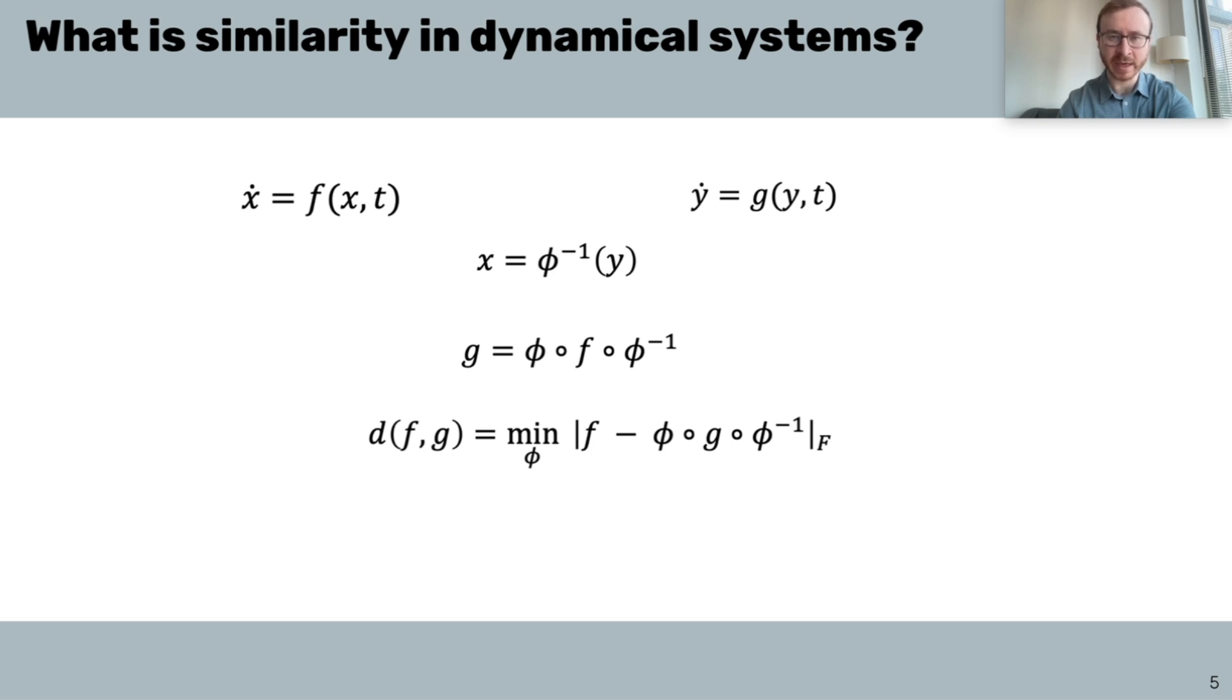The natural metric is then as follows. However, this is impractical to optimize over. We choose to map our systems to the best fitting linear system, which is motivated by a theory called Koopman operator theory. And then this is now tractable to optimize over.